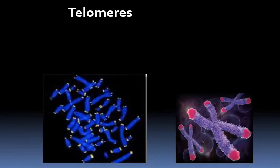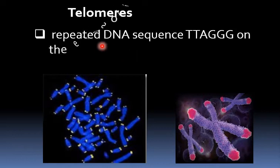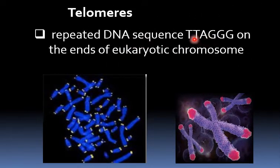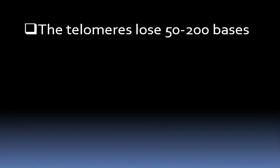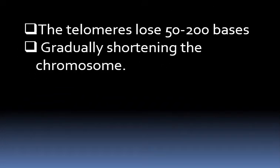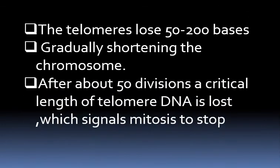The end of the chromosome is called the telomere. Telomeres are produced by the telomerase enzyme, which contains an RNA region used as a template to form the telomeric sequence. After each mitosis, telomeres lose about 50 to 200 bases, leading to gradual shortening of the chromosome. After about 50 divisions, a critical length of telomere DNA is lost, which signals mitosis to stop.